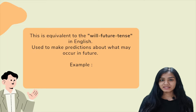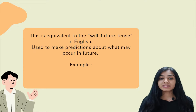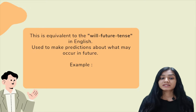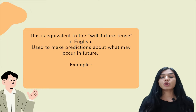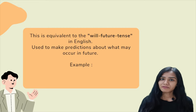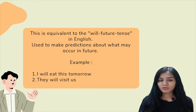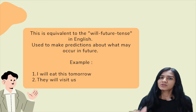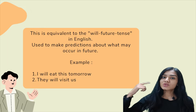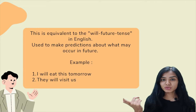What is this tense? It is equivalent to the 'will' future tense in English. It is used to make predictions about what may occur in the future. For example: 'I will eat this tomorrow' or 'They will visit us' — something that is going to happen in the future.